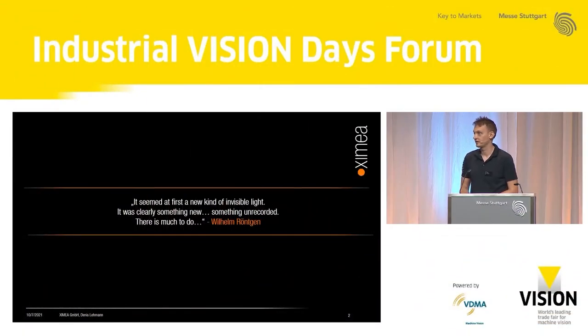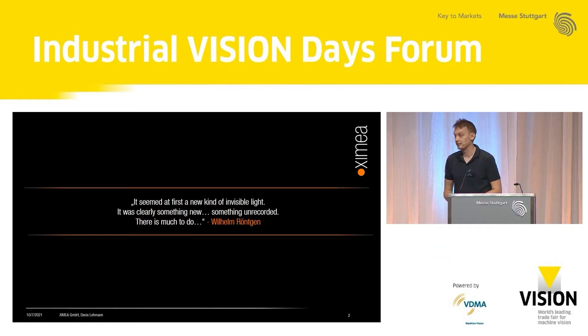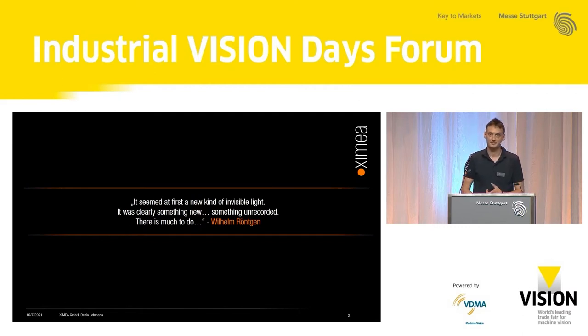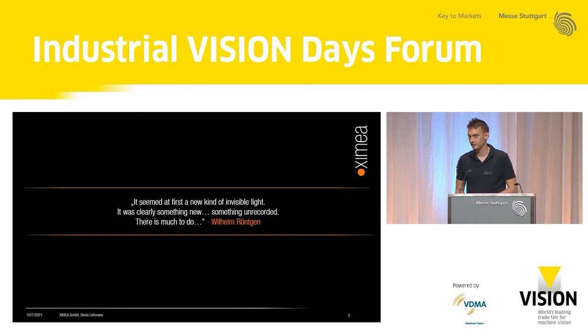Wilhelm Konrad Röntgen discovered something in 1895 that was about to revolutionize the field of physics and medicine — a new kind of invisible light that was able to pass through solid matter. Today I can only briefly introduce you to the topic. But by the end of this presentation, you shall know: what are X-rays, how can they be detected, how are X-ray cameras different from optical setups, and how can you customize your X-ray camera to fit your application?